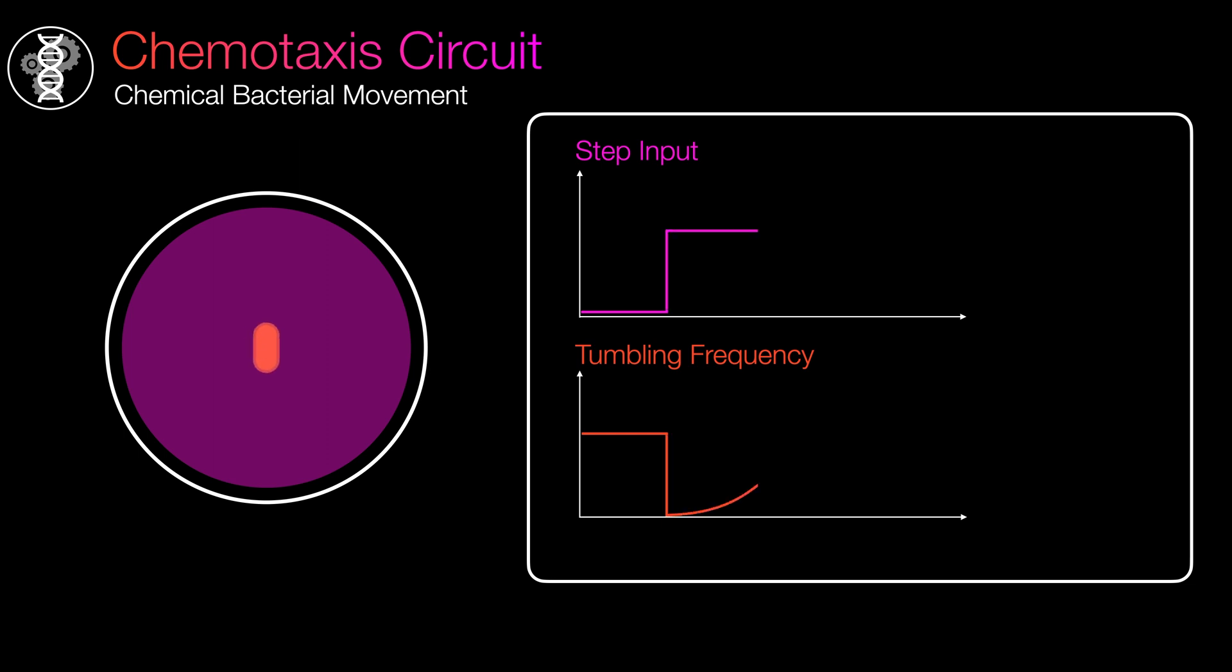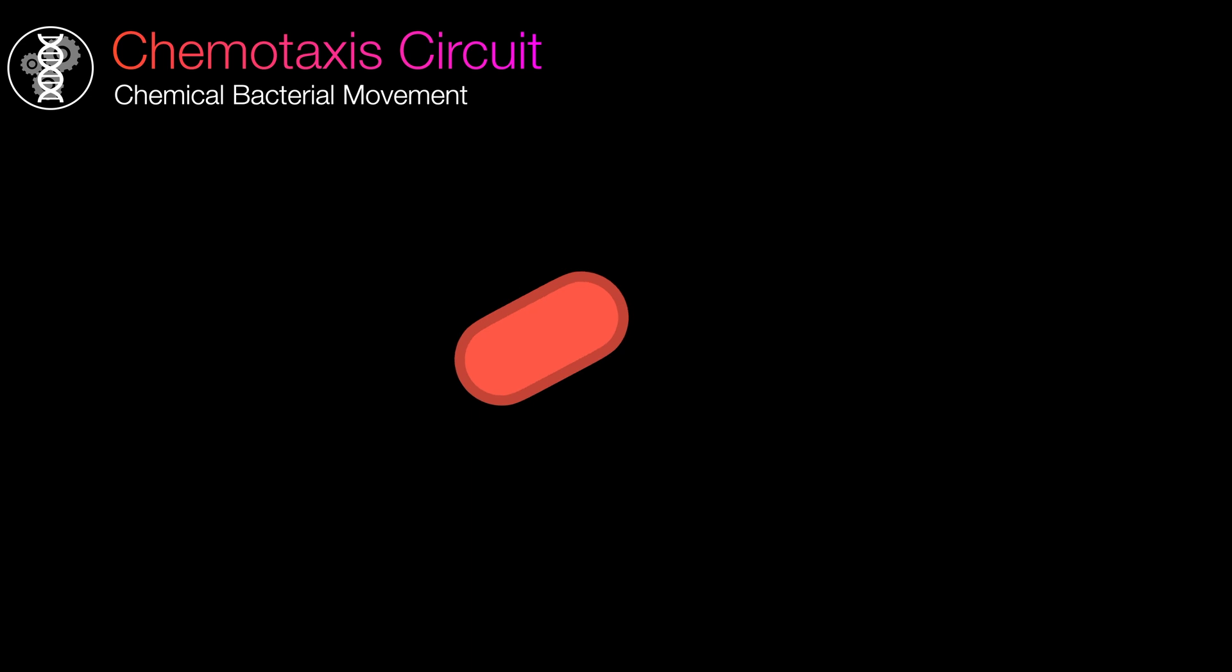However, as time progresses, a surprising phenomenon occurs. The bacteria start tumbling more and more until it appears as if nothing has changed. It is truly remarkable how the bacteria is able to not be fooled into running everywhere. This is what biologists refer to as exact adaptation. This can potentially be the clue that we've been looking for. Let's continue our investigation and delve deeper into the control panel of this system.